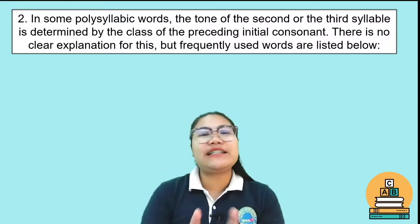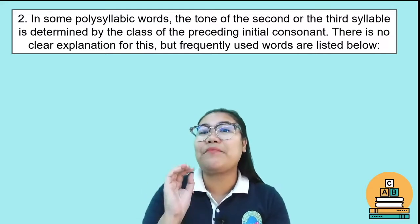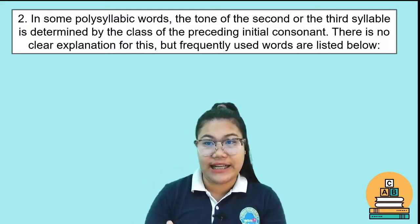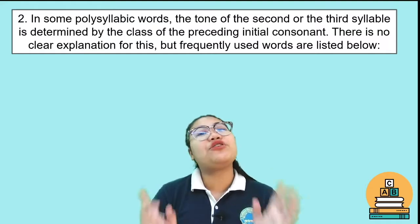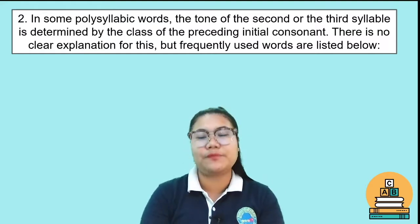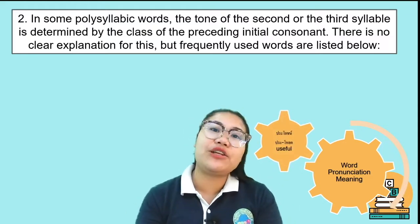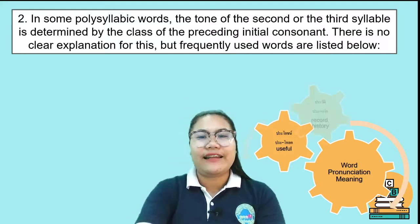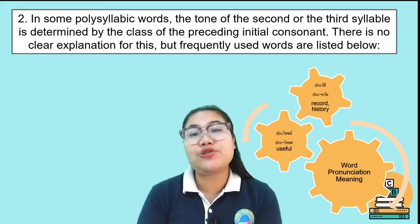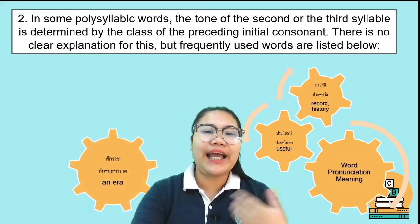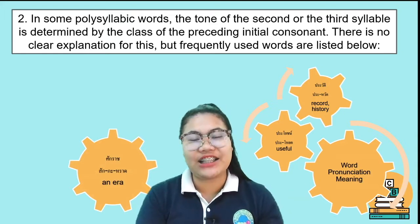In some polysyllabic words, the tone of the second or the third syllable is determined by the class of the preceding initial consonant. There is no clear explanation for this, but frequently used words are shown below. Here is the word ประโยชน์, which means 'useful'. The next one is the word ประวัติ — ประวัติ, which means 'history'. Here is the word สักราช — not สักราษ, make it low.